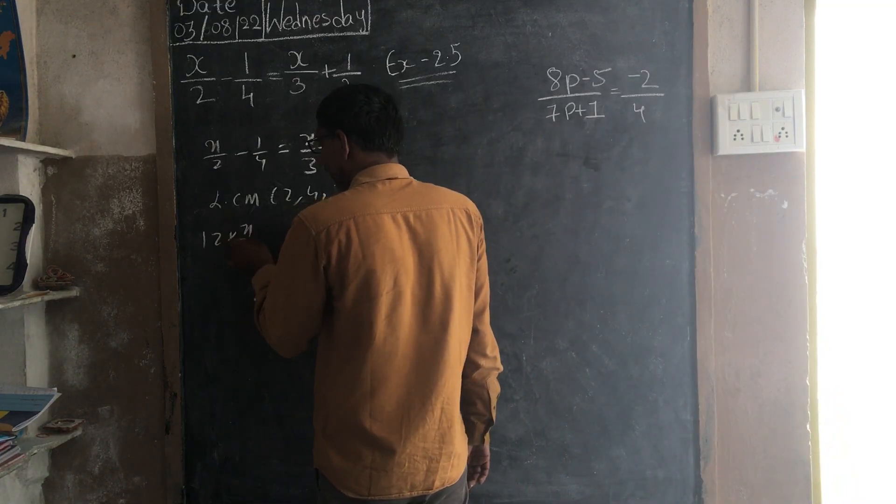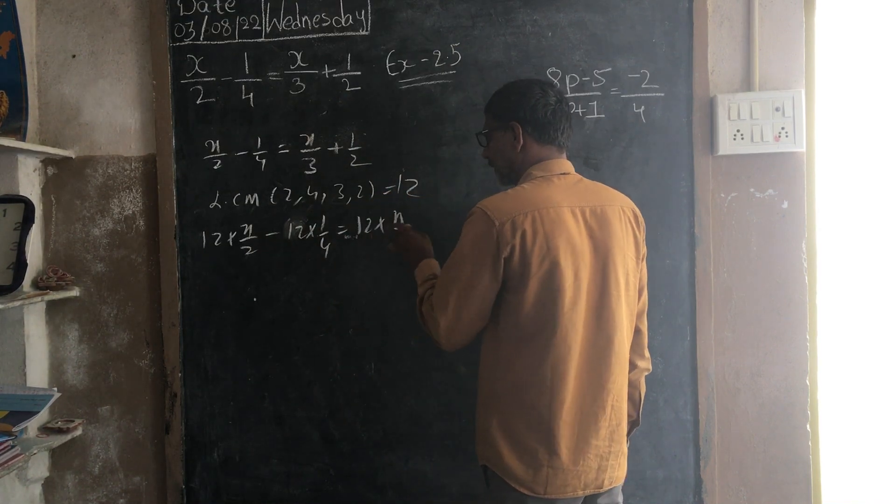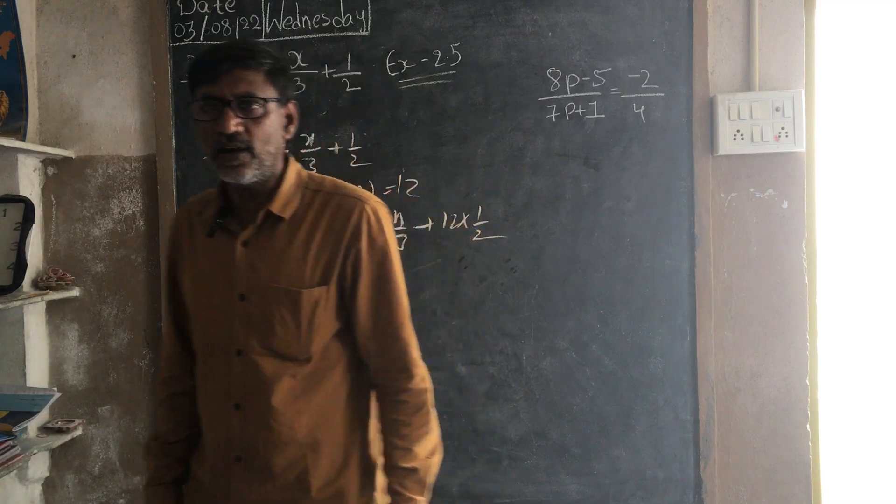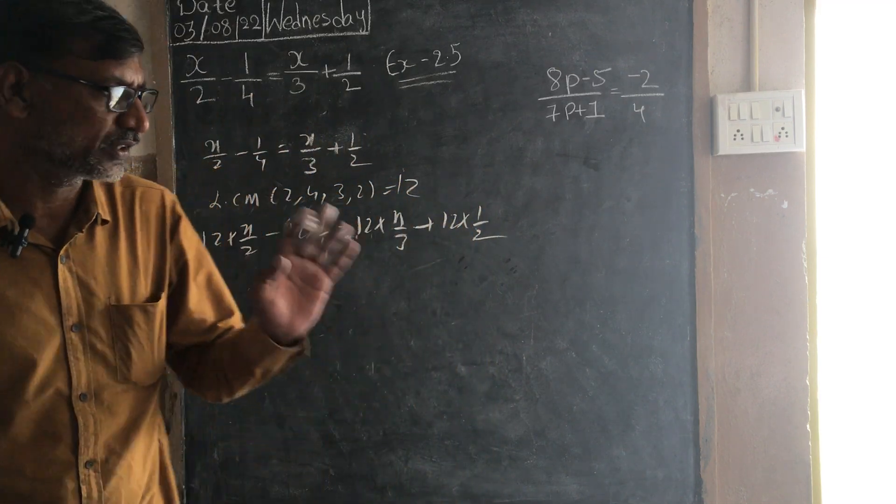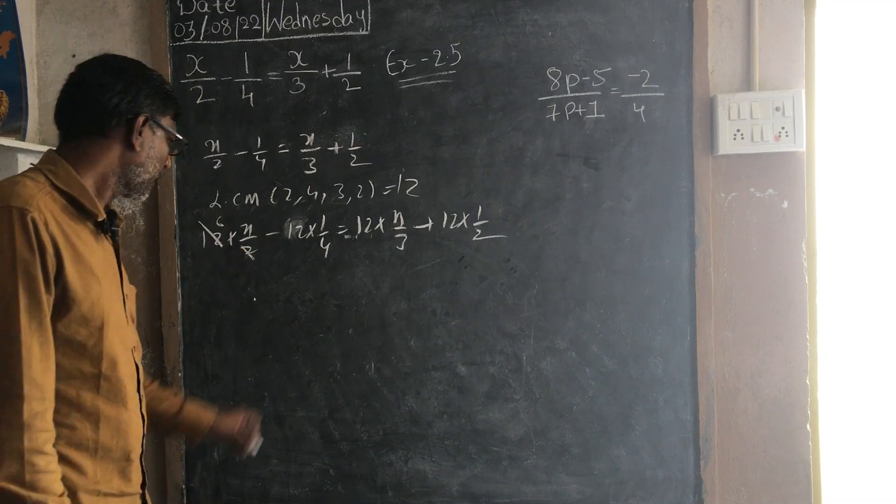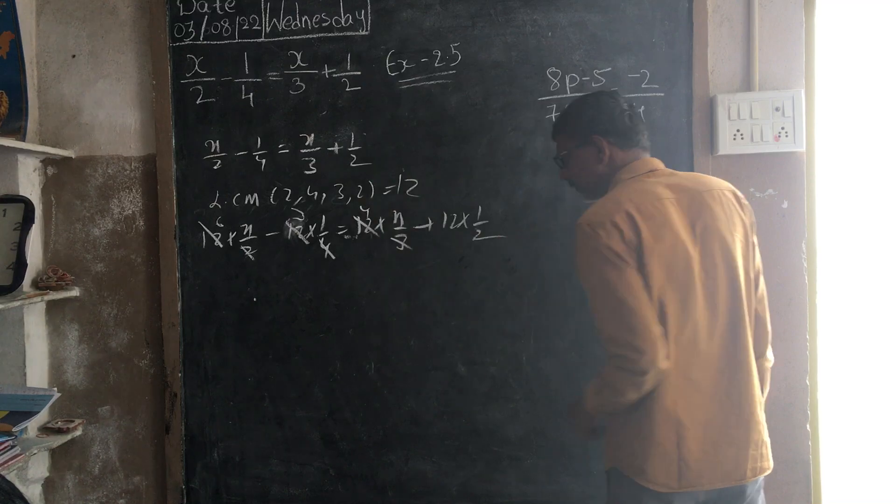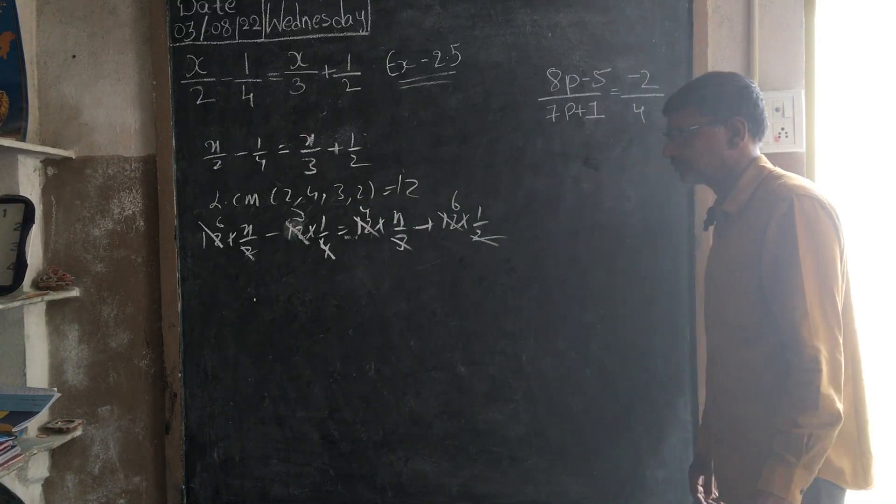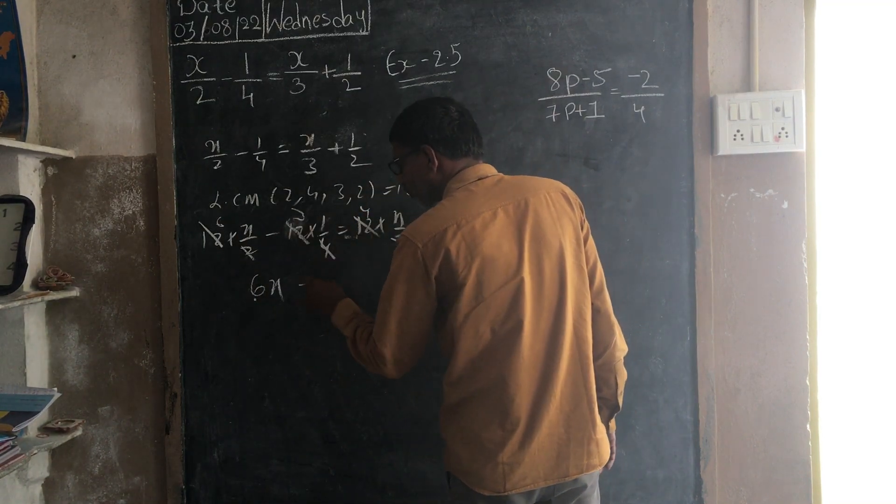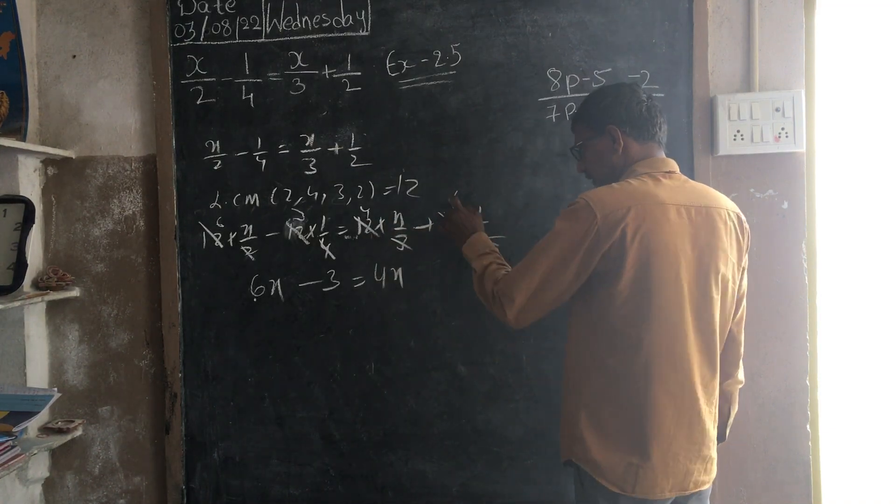12 times x by 2 minus 12 times 1 by 4 is equals to 12 times x by 3 plus 12 times 1 by 2. Is there any doubt in it? Okay, so here after 2, 6 times, 4, 3 times and 3, 4 times and 2, 6 times. 6 times x is 6x, 3 times 1 is 3, 4 times x is 4x, 6 times 1 is 6.